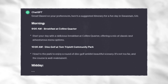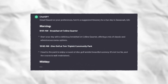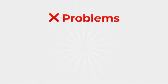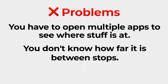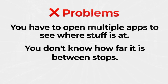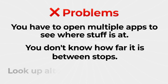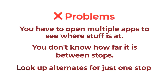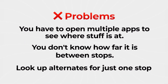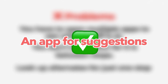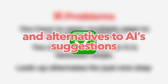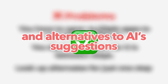We absolutely loved this — we actually followed the itinerary shown, had a great time — but there were a few problems with this MVP. The first one is you had to open up multiple apps to see where stuff is at. I had no idea if we were going to have to drive 20 minutes to certain places or if it was just a five-minute walk over to the next spot. The other part we didn't like is that sometimes we actually wanted to look up alternatives for a specific spot. For example, we weren't sure where this Triplet Community Park was, and we wanted to know if there were other disc golf spots for us to stop at.